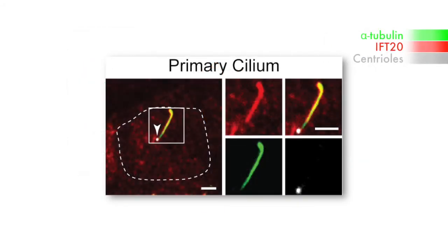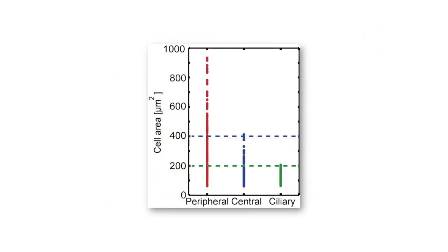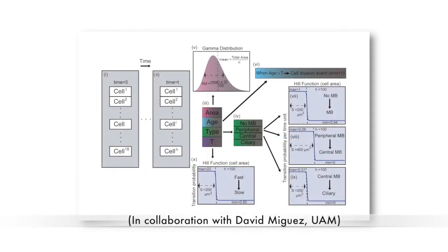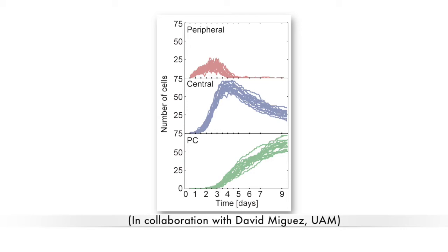MDCK cells are known to form primary cilia when grown at high density. Bernabé-Rubio et al. therefore examined whether cell area influences the mid-body remnant's behaviour, and found that cells with a central remnant had an area less than 400 square microns, while cells with a primary cilium had an area less than 200 square microns. They modelled this mathematically by measuring parameters such as kinetics of cell growth, cell area, and the conservation of the mid-body, and the simulation fits very well with the experimental data.